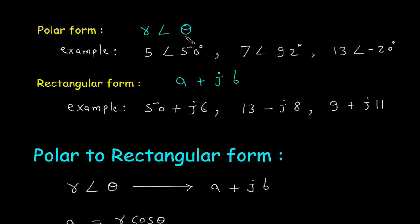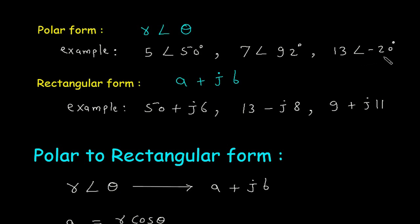R at an angle of theta is called the polar form. Examples of polar form are: 5 at an angle of 50 degrees, 7 at an angle of 92 degrees, and 13 at an angle of minus 20 degrees.